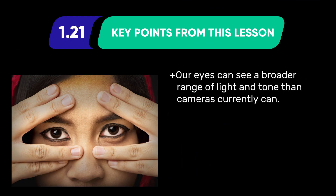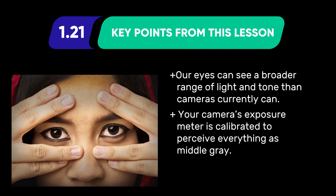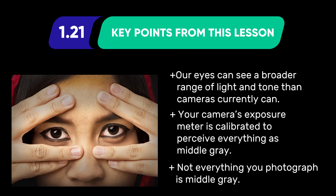Key points from this lesson: our eyes are capable of seeing a broader range of light and tone than any camera currently can. Your camera's exposure meter is calibrated to perceive everything as middle gray — and not everything you photograph is middle gray.